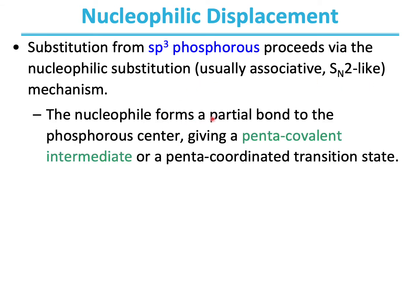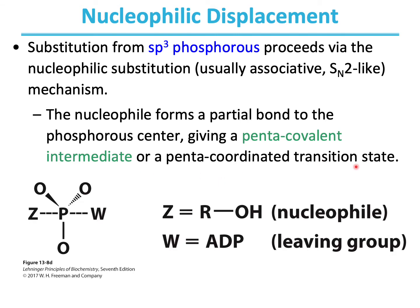The nucleophile forms a partial bond to the phosphorous center, giving a pentacovalent intermediate or a pentacoordinated transition state. If the electrophilic center is ATP, and a nucleophile such as an alcohol (Z = ROH) attacks the phosphorous center, and W is the leaving group, which is ADP, what essentially happens is it goes via a pentacoordinated transition state.